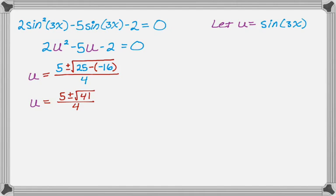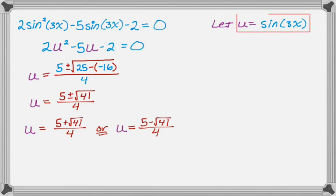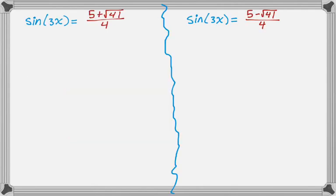What I usually do here is break this up, because the plus or minus is convenient but it kind of hides some things in this particular problem. So u is either 5 plus radical 41 all over 4, or u could potentially be 5 minus radical 41 all over 4. And we have to remember that u is actually sine of 3x. So now we have two trig equations to solve: sine of 3x equals 5 plus radical 41 over 4, or sine of 3x equals 5 minus radical 41 over 4.